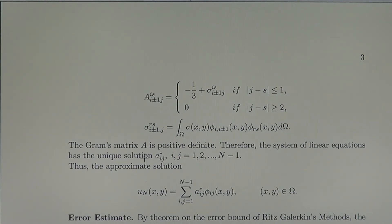The Gram's matrix A is positive definite. That is a known fact, the Gram's matrix of the coordinates which are linearly independent is positive definite. Therefore, the system of linear equations has the unique solution, and we get the approximate solution in the form of the linear combination.